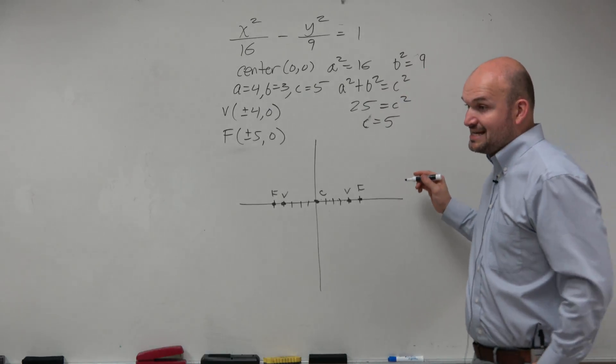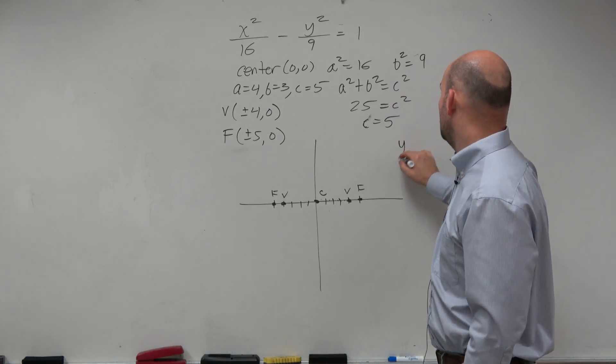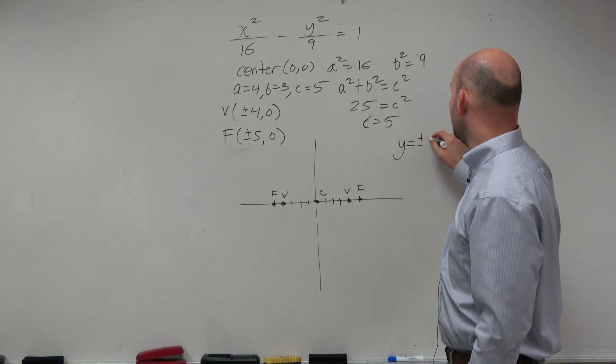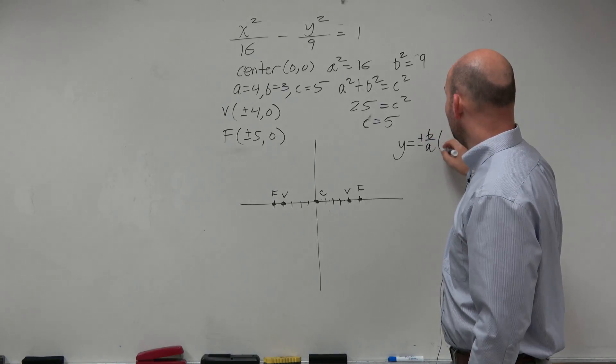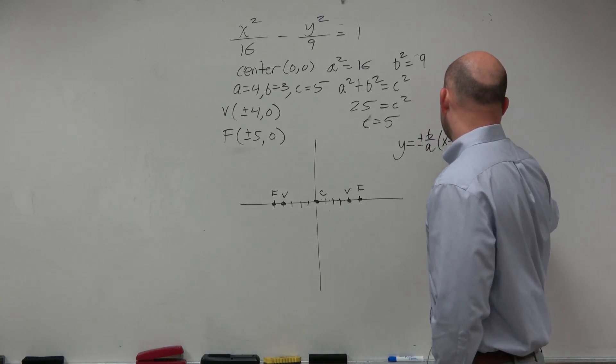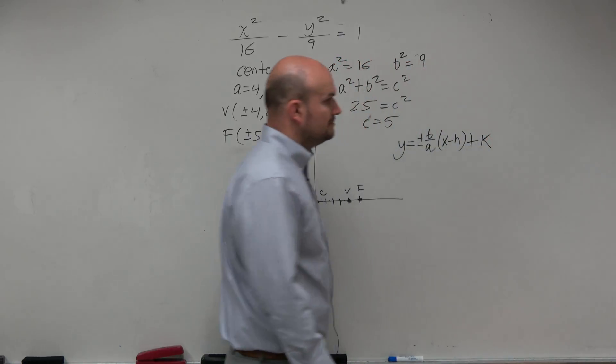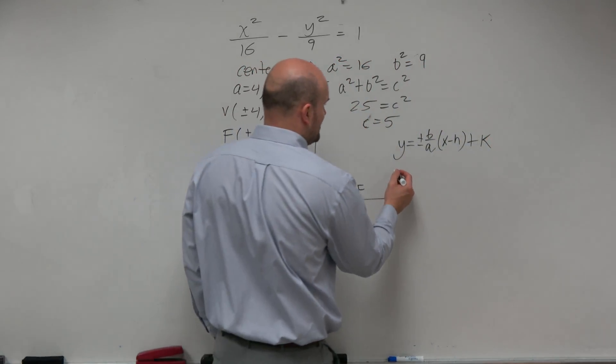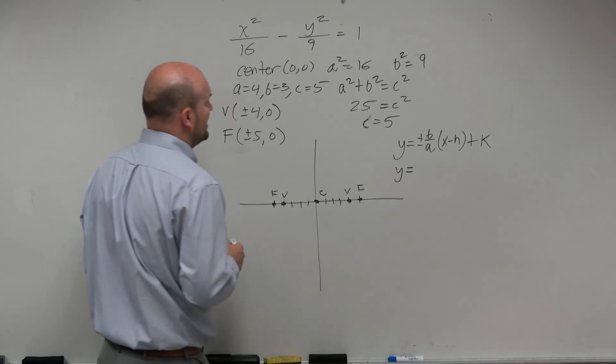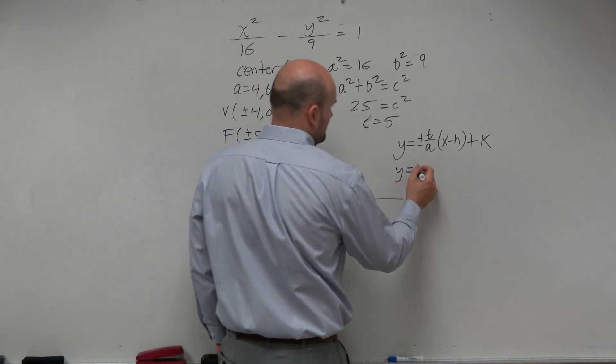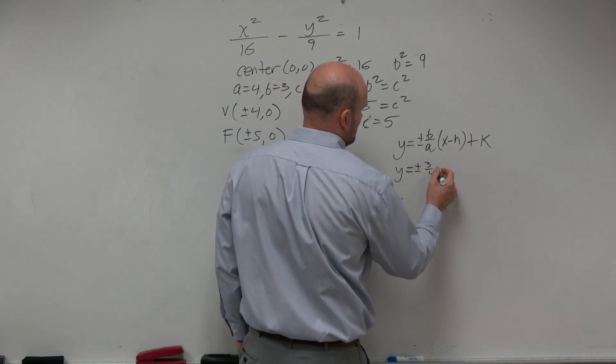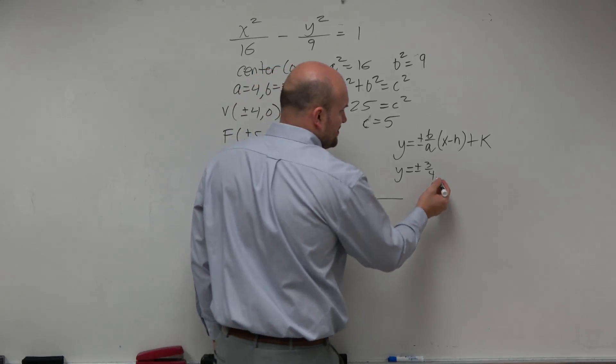Now let's go and find the asymptotes. So the equation is different for the asymptotes. This is going to be y equals plus or minus b over a times x minus h plus k. Well, y equals b over a, let's take a look at that. b over a is going to be 3 fourths. And then h and k is 0, so we can just write it as an x.